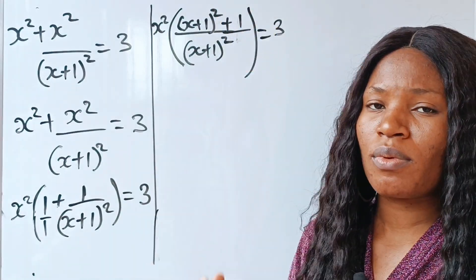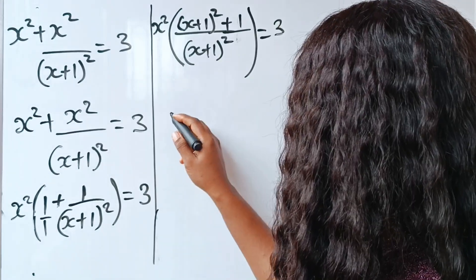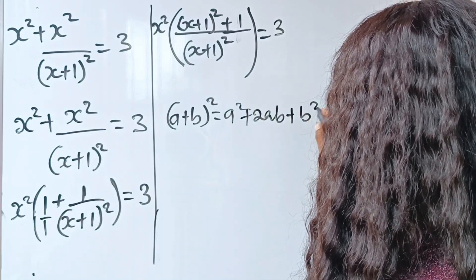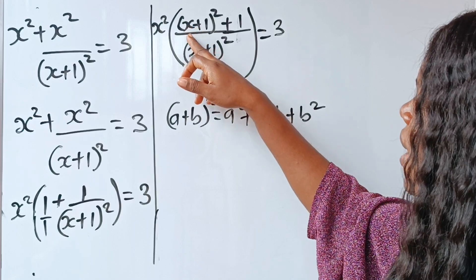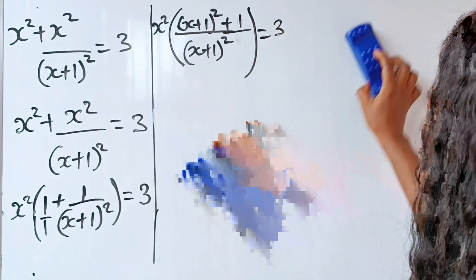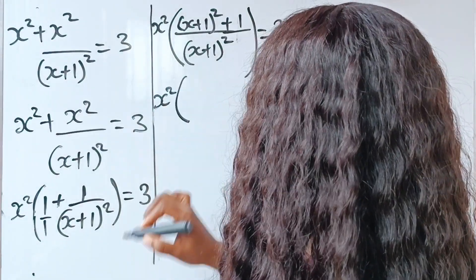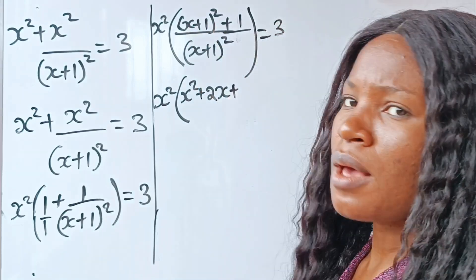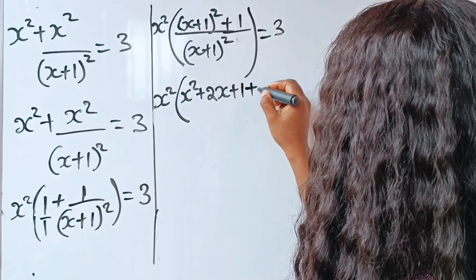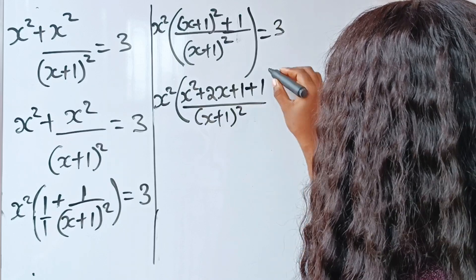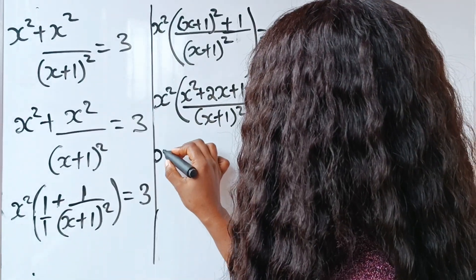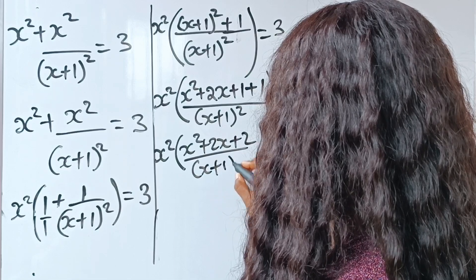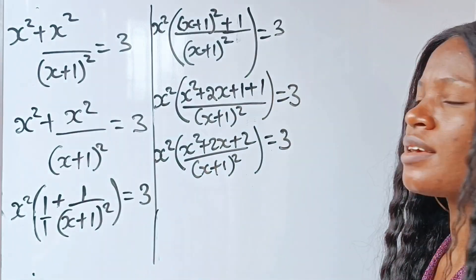Now we have (x+1) squared. I want us to expand the numerator, and I want us to recall this algebra identity: (a+b)² = a² + 2ab + b². In this case our a is x while our b is 1. So let's expand: x squared, open brackets — x² plus 2ab, that is 2 times x times 1 which is 2x, plus b squared which is 1 squared which is 1. Then plus 1, everything divided by (x+1) squared equals 3. So we have x² brackets (x² + 2x + 2) divided by (x+1) squared, equal to 3.